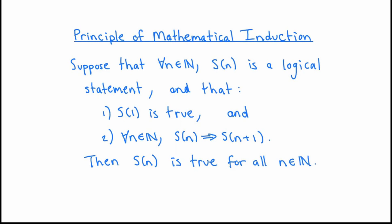To state the principle of mathematical induction, suppose that for each positive integer n, s(n) is a logical statement, and that two things hold. Number one, s(1) is true, and number two, for each positive integer n, if s(n) is true, then s(n+1) is true. Under these assumptions the principle of mathematical induction claims that s(n) is true for all positive integers n. Now when you first see this, you might question whether or not it is indeed a correct logical form of argument, but we're going to treat this principle as one of our axioms — we're going to assume that it is a correct form of logical argument.